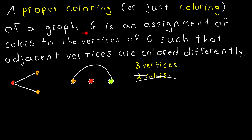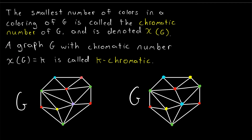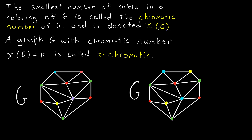So one more time: a coloring of a graph G is an assignment of colors to the vertices of G such that adjacent vertices are colored differently. When we talk about colorings, we're typically interested in coloring a graph with as few colors as possible. The smallest number of colors in a coloring of a graph G is called the chromatic number of G, denoted chi of G. A graph G with chromatic number equal to K is called K chromatic.